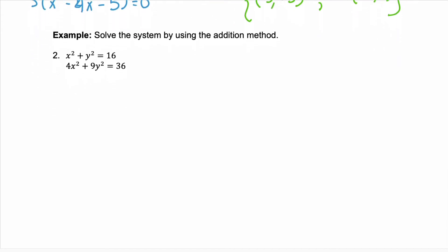In example 2, we're going to solve the system using the addition method. Remember when you're adding two equations, you're trying to eliminate one of the variables. So you want to be adding an opposite somewhere. So here notice that we can multiply the first equation by negative 4 and that will eliminate our x squared. Our first equation would become negative 4x squared minus 4y squared equals negative 64.